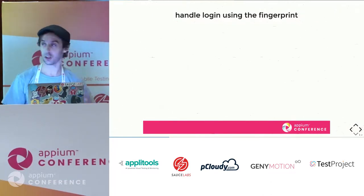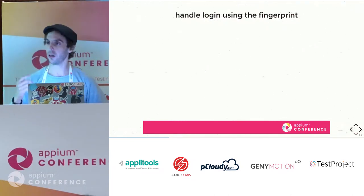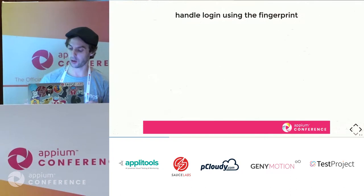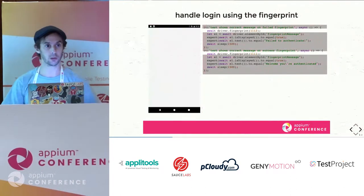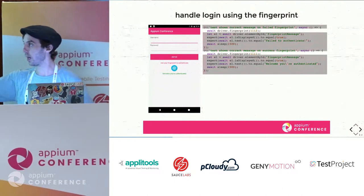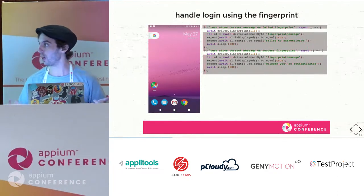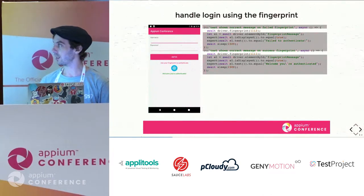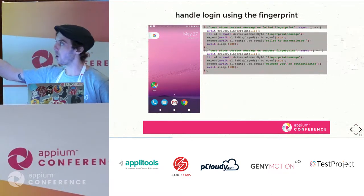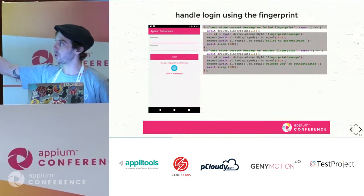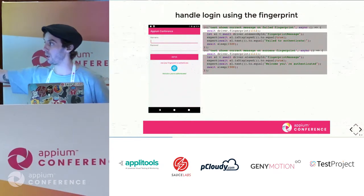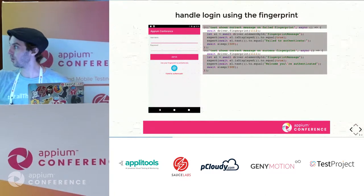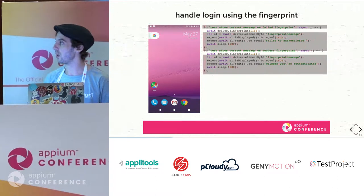Another example for authentication is using fingerprints. More and more devices now have biometric authentication — fingerprints, Face ID, Touch ID. You can actually test this with the emulator without doing any hacky things. Your first scenario is sending the wrong fingerprint to make sure you're showing the right error message. The second one is sending the correct fingerprint, verifying it says welcome, you're authenticated, and navigating to the next part of the application.